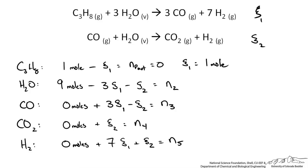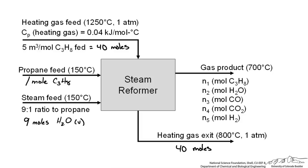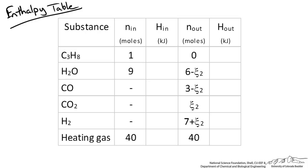From this point we set up our energy balances. Looking at the process, we know a certain amount of energy is transferred from the heating gas to the reactor. The reactor is adiabatic, and we can look up or determine the enthalpy of each species entering or exiting. The energy balance will help us solve the unknown material balance variable. The most common approach is to use an enthalpy table with mole amounts filled in from the material balances.